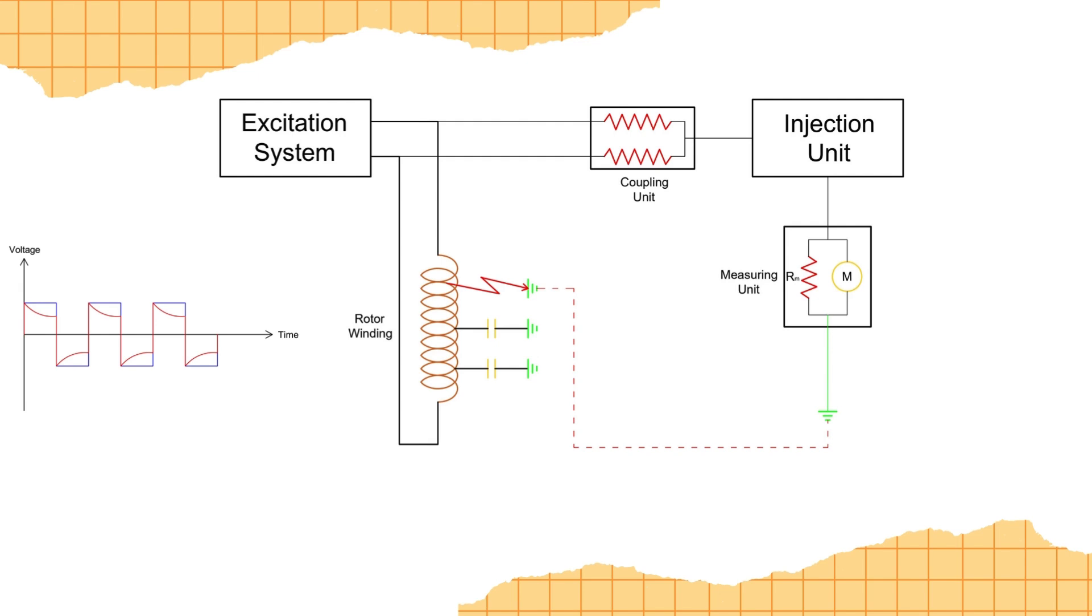By applying Kirchhoff's voltage law in this loop, we can get the equation injected voltage equals to fault current into RC by 2, as the coupling resistors are in parallel, plus RG generator field resistance, plus RF fault resistance, plus RW wire resistance, plus RM measuring resistance. Here, only fault resistance is unknown. By putting the values of other parameters, we can easily get the value of fault resistance.